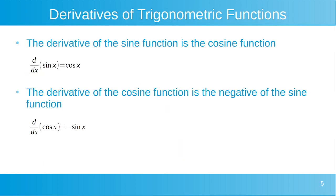The derivative of the sine function is the cosine function. So, the derivative of sin x with respect to x is equal to cos x. And the derivative of the cosine function is the negative of the sine function — the derivative of cos x with respect to x is equal to minus sin x. For now, we're just going to state what these derivatives are, and we may look at proving this in a later video. This allows us to start calculating derivatives using the differentiation rules, and to start looking at practical applications.